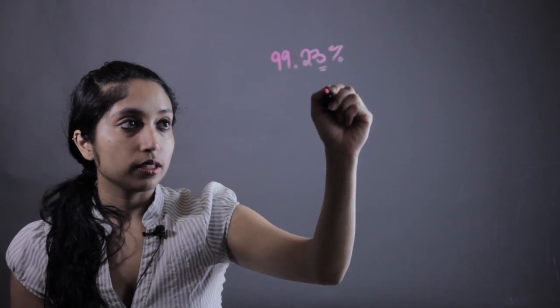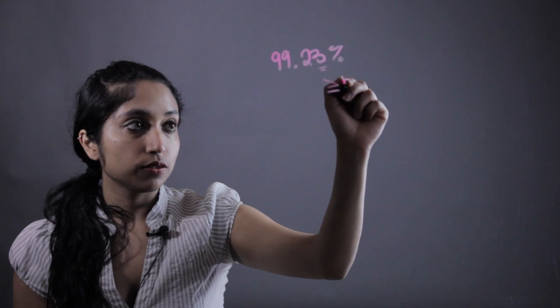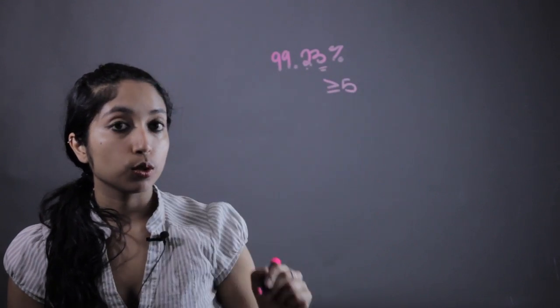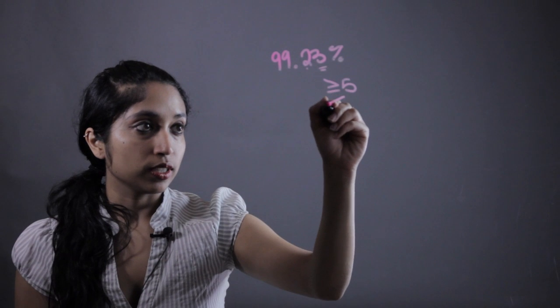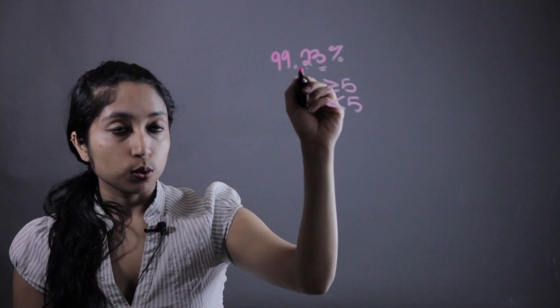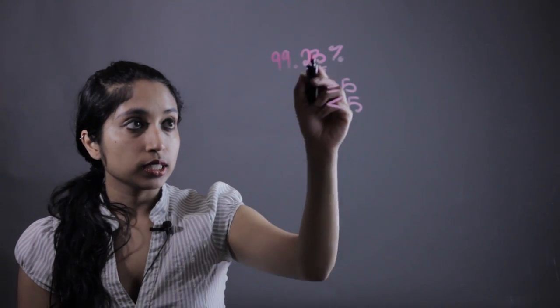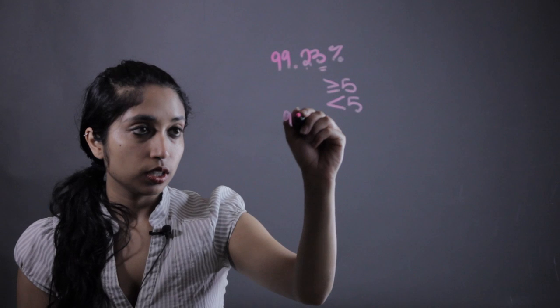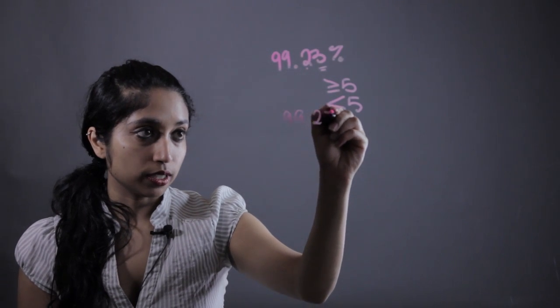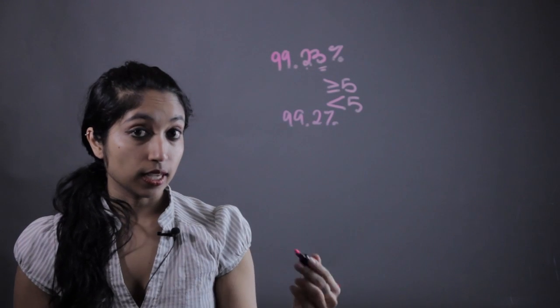to do is look at the number behind it. If it is greater than or equal to five, this number will increase by one. If it is less than five, this number will stay the same. It will stay two because this is less than five, so 99.2 percent. That's how you would round